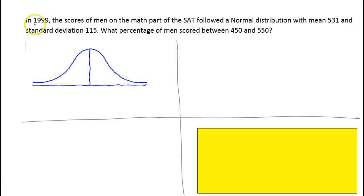Here is a typical problem. In 1999, the scores of men on the math part of the SAT followed a normal distribution, meaning a bell curve, with a mean of 531 and a standard deviation of 115. What percentage of men scored between 450 and 550 on the SATs?